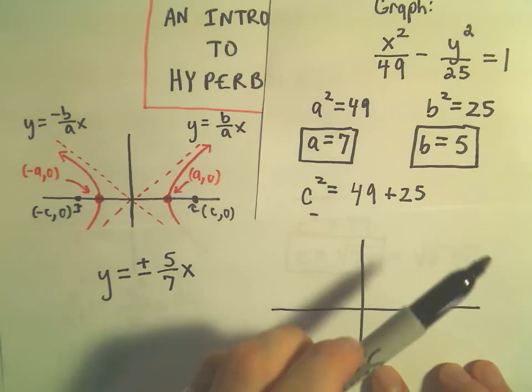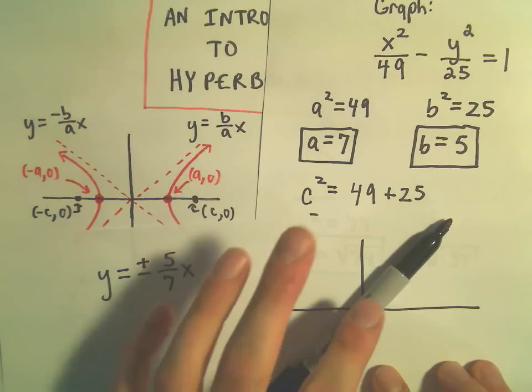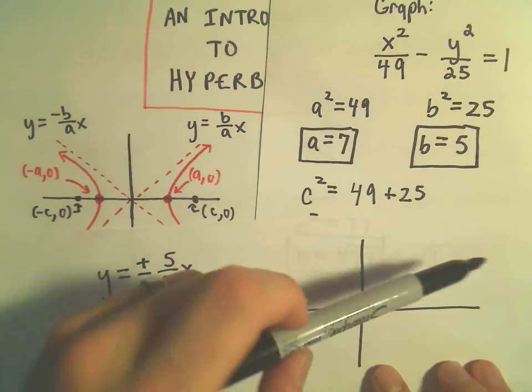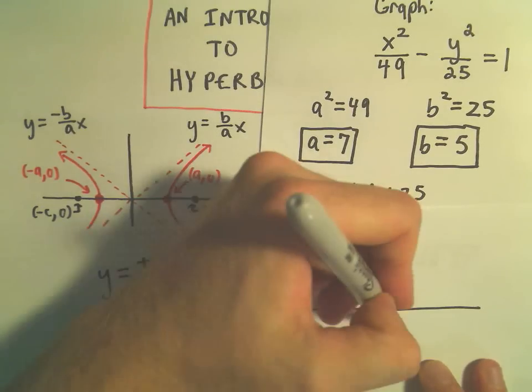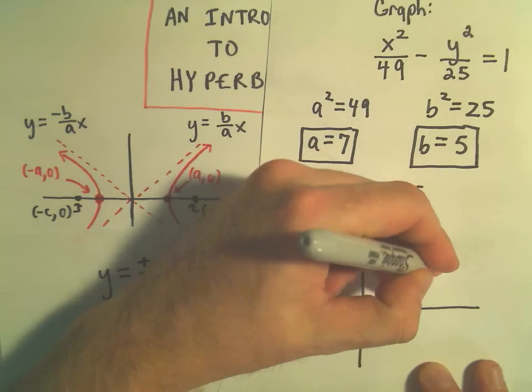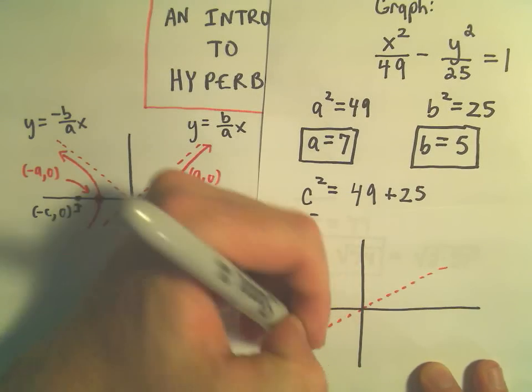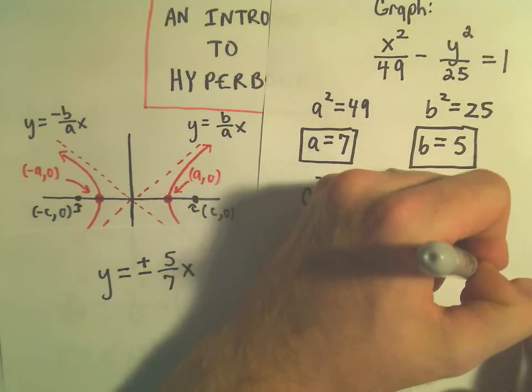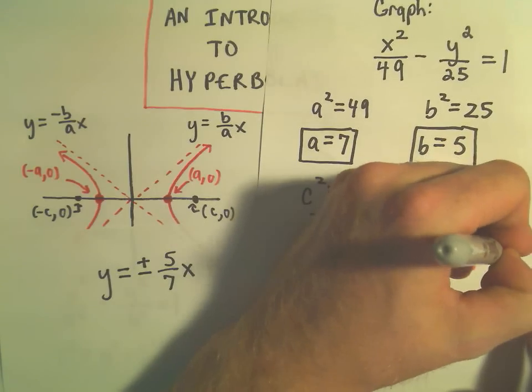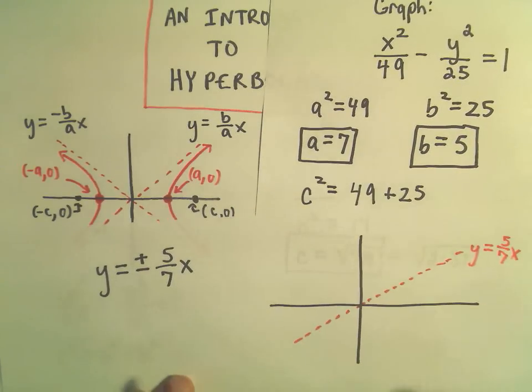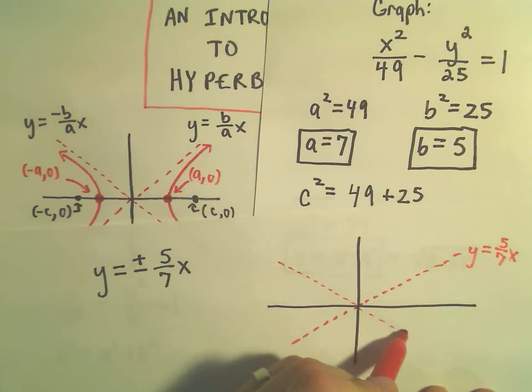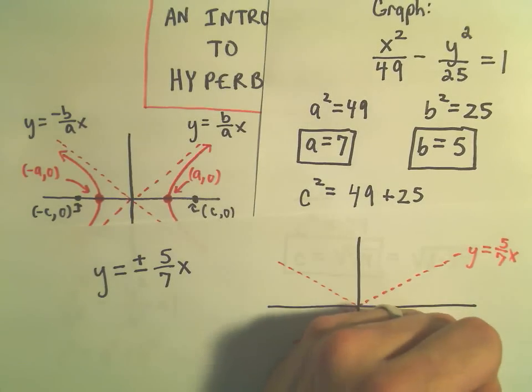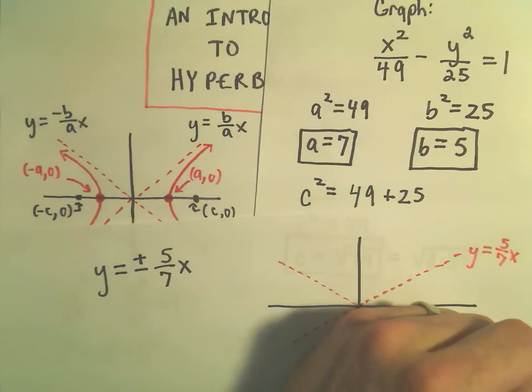If it had a slope of 1 it would kind of just go off at a 45 degree angle. 5 sevenths will be a little bit less steep than that. So I usually graph my asymptotes first. So there's y equals positive 5 over 7 x. And likewise we would have y equals negative 5 over 7 x.